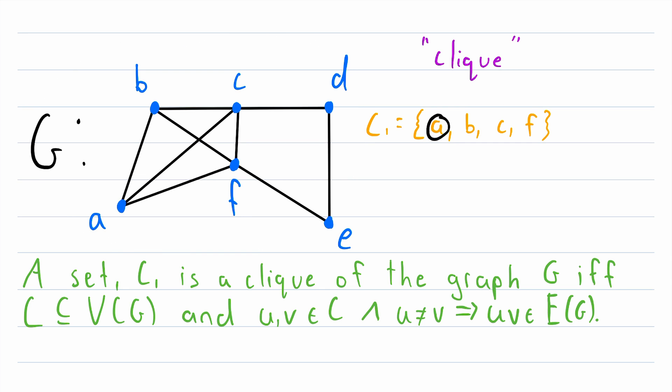For example, the vertices A and F. A and F are adjacent in G. Another example, B and C. B and C are also adjacent in G. For another example, we could look at, let's say, B and F. B and F are also adjacent in G. So every pair of distinct vertices in C1 is adjacent in G. So it is a clique.